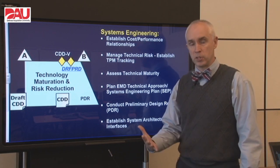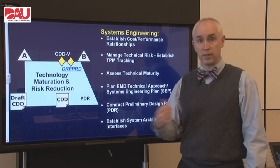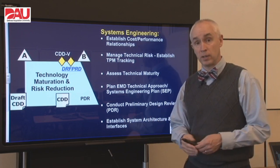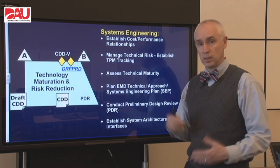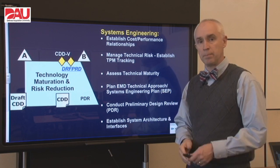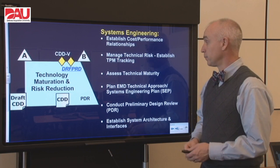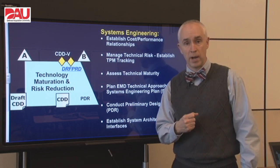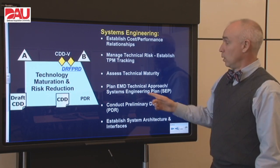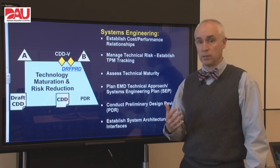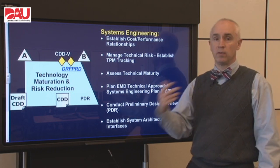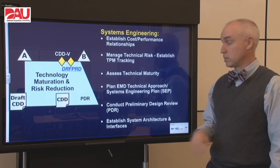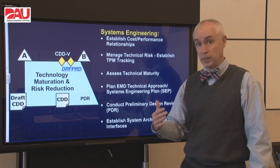Let's switch gears to the technical side and systems engineering. You might imagine that if we're doing competitive prototyping and a lot of analysis, the systems engineers are very involved. They want to establish cost-performance relationships early on and see how cost varies as a function of performance — where the knees of the curve are, where we really want to stop paying because we're not getting much more for the dollar. We also want to assess technical maturity and manage technical risk, and these are the folks that will help with technical performance measure tracking. We want to plan for engineering and manufacturing development, update the systems engineering plan, and conduct the preliminary design review prior to getting out of this phase, which establishes the system architecture and the external and internal interfaces.